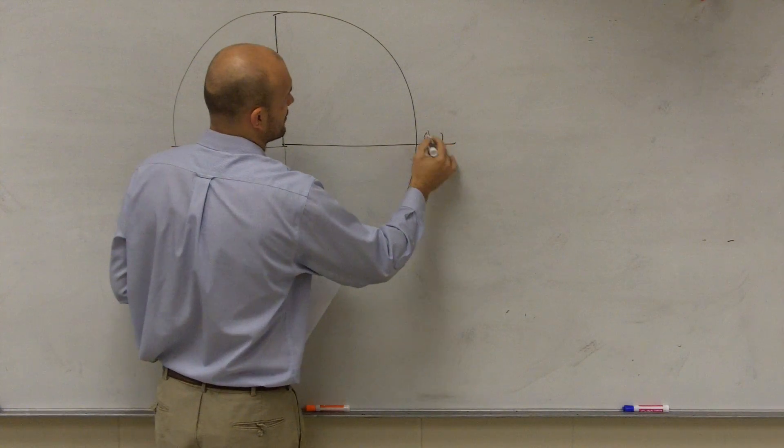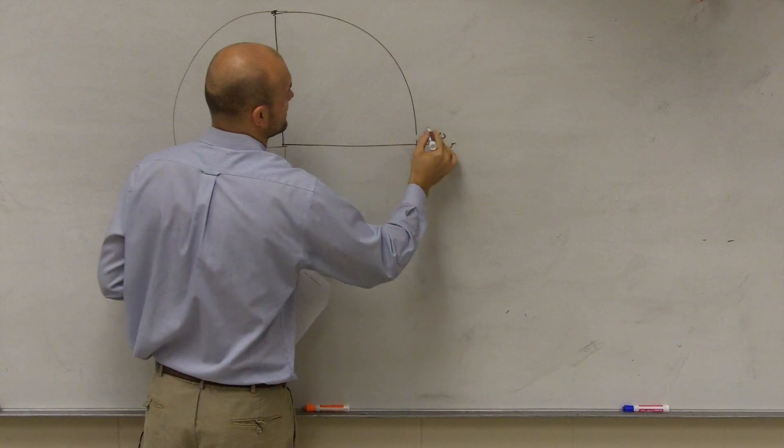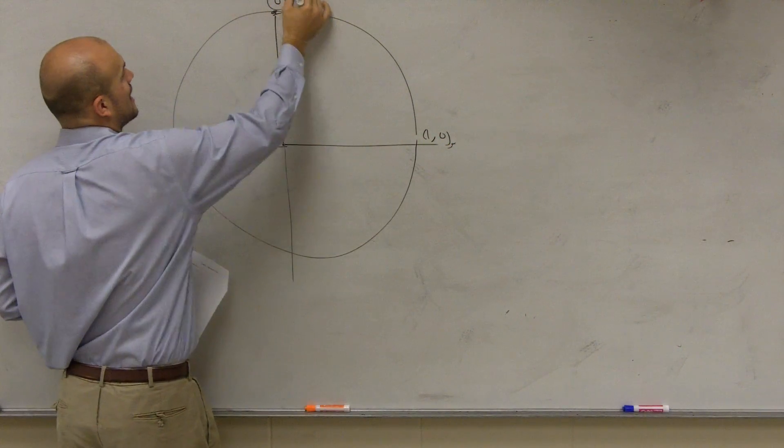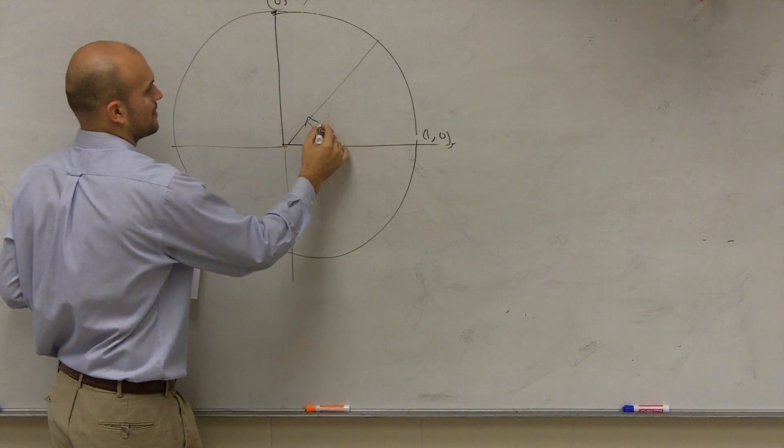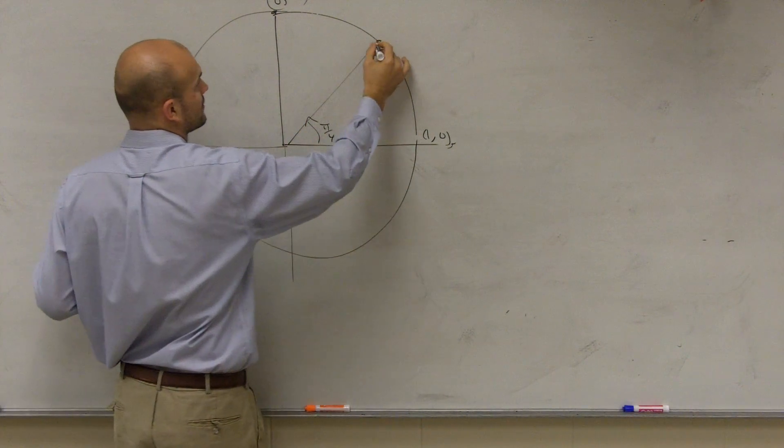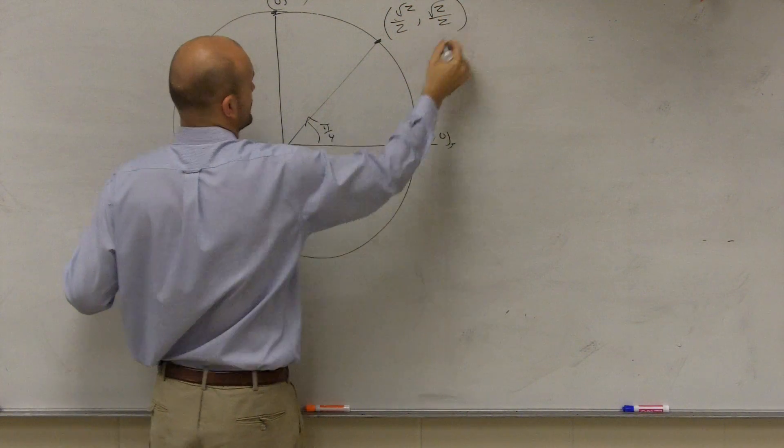So we found these points, 0 comma 1, I'm sorry, that's 1 comma 0, there we go, 0 comma 1, and then see halfway, of course, was pi over 4, which is at the point square root of 2 over 2, comma square root of 2 over 2.